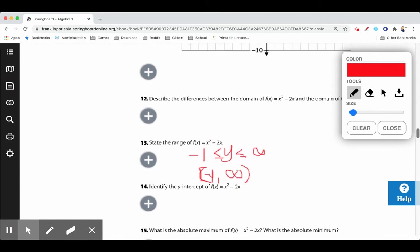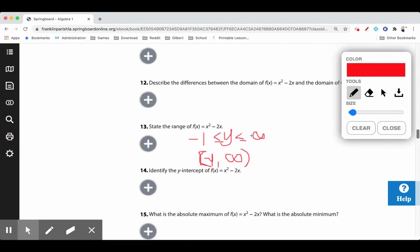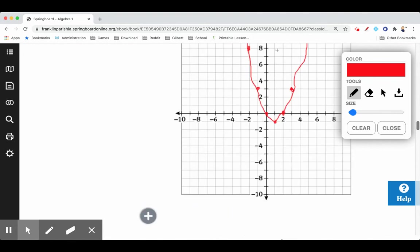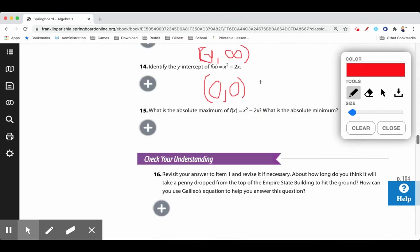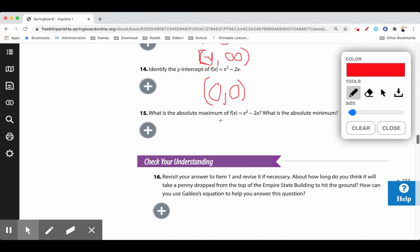Y-intercept is 0, 0. That's where it crosses the y-axis. And then the absolute maximum of this one? There is no absolute maximum—it goes up forever, so there's no absolute maximum. But there is an absolute minimum: 1, negative 1. But no absolute maximum, no max.